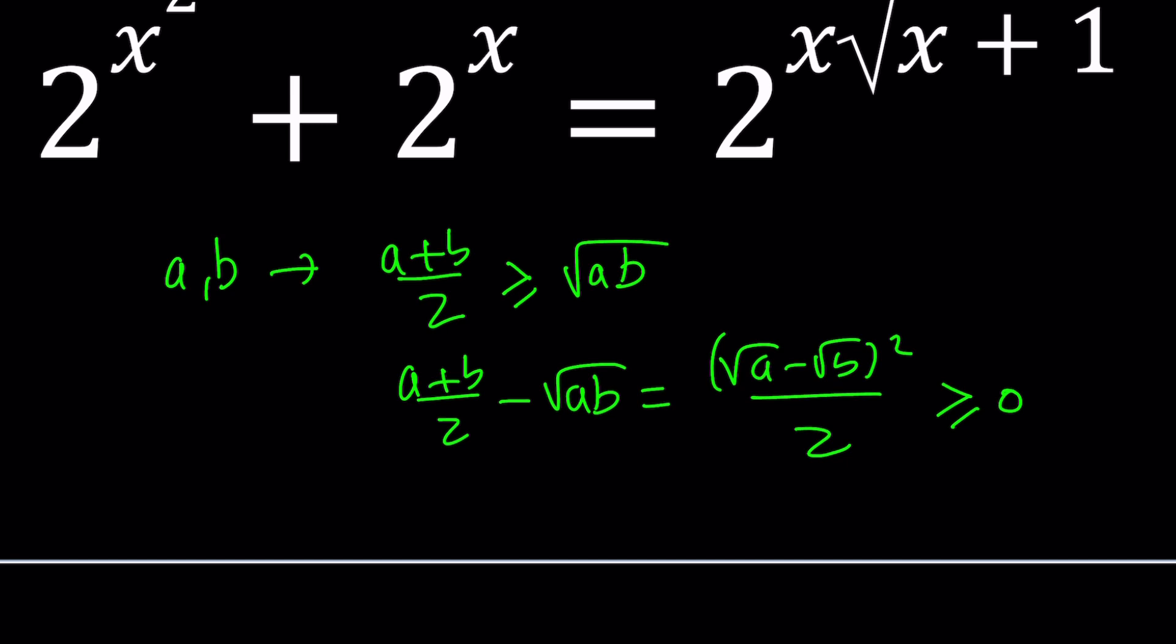Of course, A and B have to be non-negative in order for this to be well-defined. But square root of X already takes care of that, because if square root of X is well-defined, that means X is greater than or equal to 0. And what happens when we have an equality? When A and B are equal, of course, then their arithmetic mean is the same as their geometric mean.